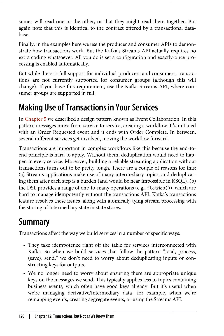Making use of transactions in your services: in chapter 5 we described a design pattern known as event collaboration. In this pattern, messages move from service to service, creating a workflow. It's initiated with an order requested event and ends with order complete. In between, several different services get involved, moving the workflow forward. Transactions are important in complex workflows like this because the end-to-end principle is hard to apply. Without them, deduplication would need to happen in every service. Moreover, building a reliable streaming application without transactions turns out to be pretty tough. Streams applications make use of many intermediary topics, and deduplicating them after each step is a burden and would be near impossible in KSQL. The DSL also provides a range of one-to-many operations — for example, flatmap — which are hard to manage idempotently without the transactions API. Kafka's transactions feature resolves these issues, along with atomically tying stream processing with the storing of intermediary state in state stores.